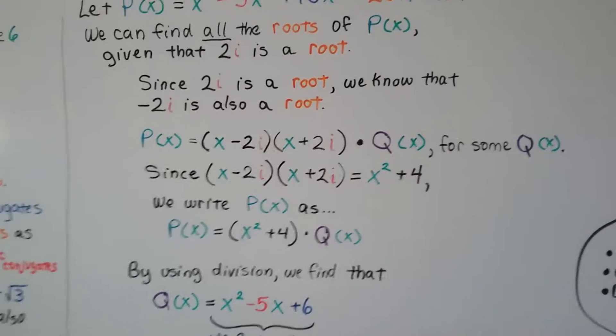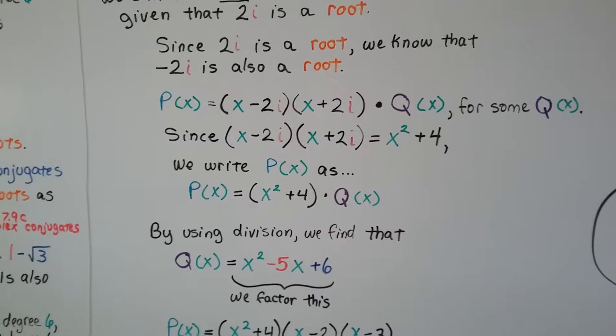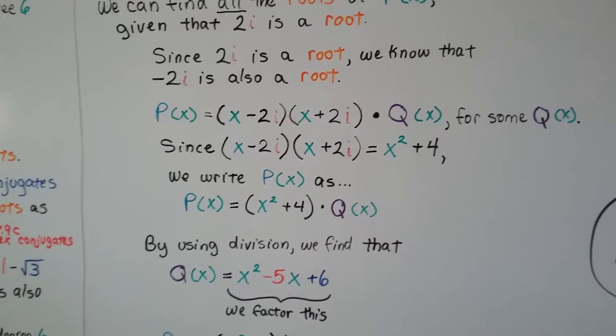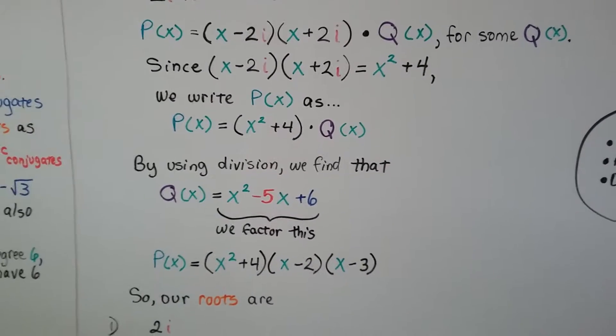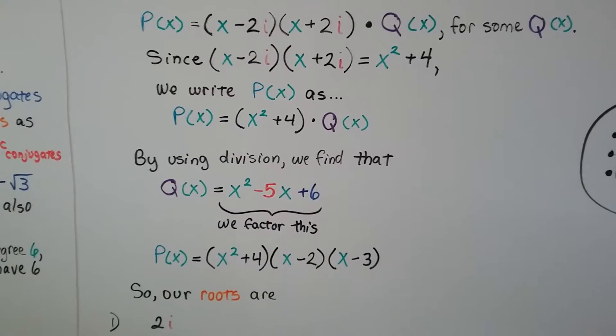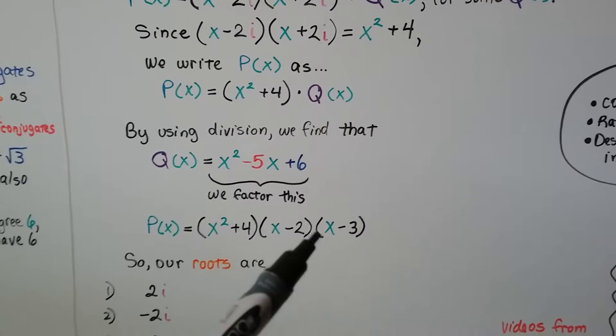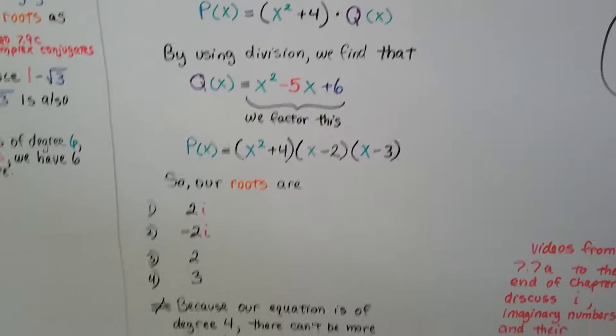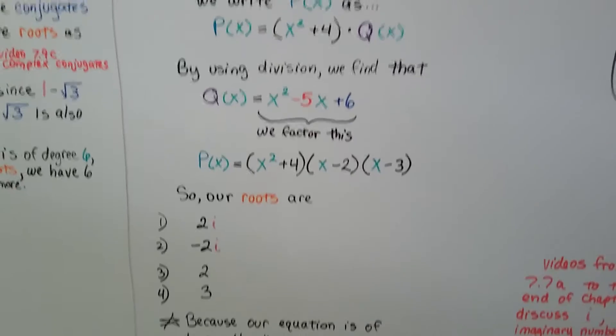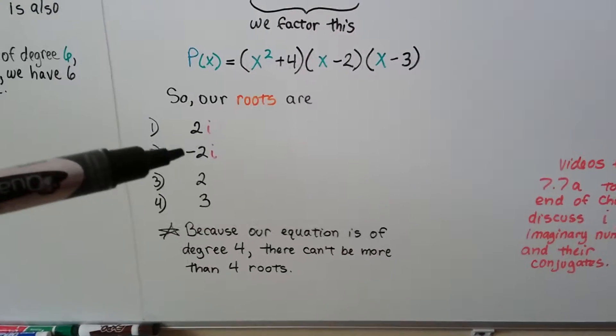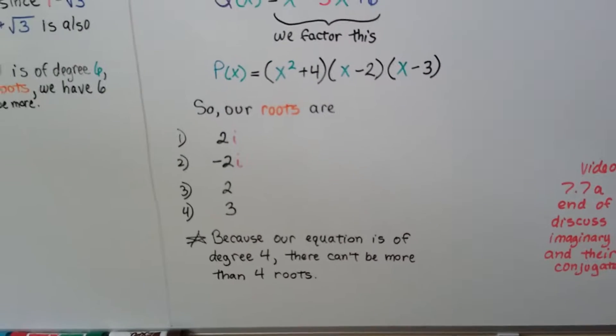Since x minus 2i times x plus 2i equals x squared plus 4, we write p of x as x squared plus 4 times q of x. By using division, we find that q of x equals x squared minus 5x plus 6. We can factor this. It becomes p of x equals x squared plus 4 times x minus 2 times x minus 3. So our roots are 2i, negative 2i, 2 and 3. We have 4 of them because it was to the 4th degree. We can't have more than 4. Because our equation is of degree 4, there can't be more than 4 roots.